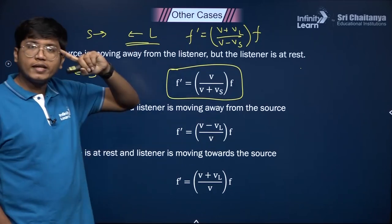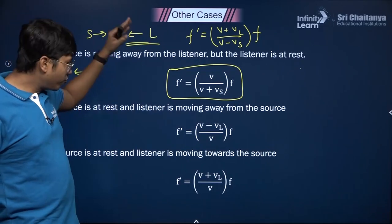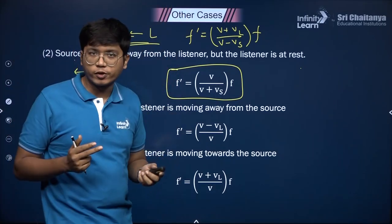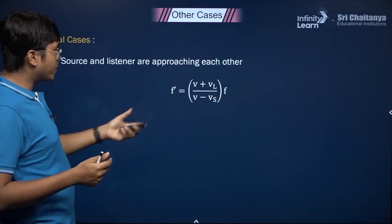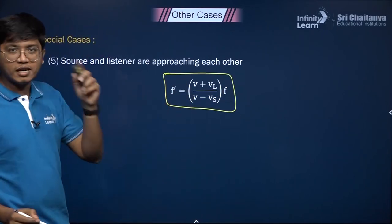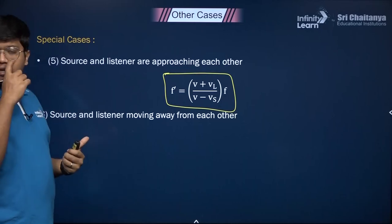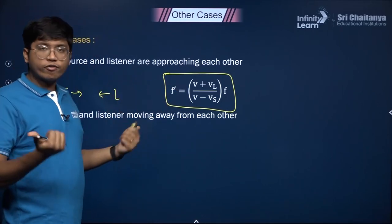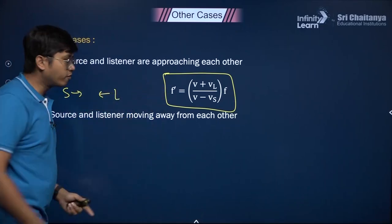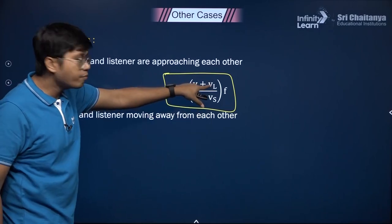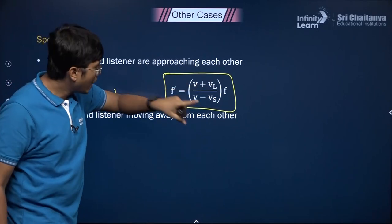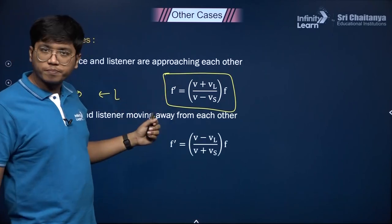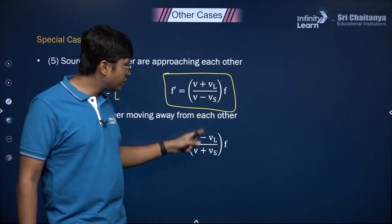So you see, just this one equation is all you need. If you ever see a direction reversed, just change the sign of that variable. If something is at rest, just make it zero. The last combined case is source and listener both moving away from each other. Originally both were approaching; now both directions are reversed, so each gets a negative sign. Vl with a negative sign makes the numerator V − Vl; Vs with a negative sign makes the denominator V − (−Vs) = V + Vs. So the formula becomes F' = (V − Vl) / (V + Vs) × F.